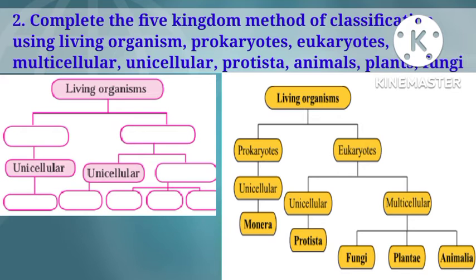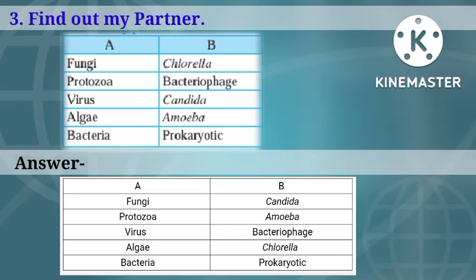In eukaryotes, unicellular and multicellular are two types. In unicellular, the second kingdom is Protista. In multicellular, Fungi, Plantae, and Animalia — these three kingdoms are included.